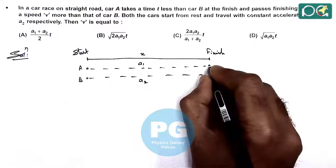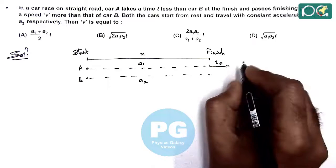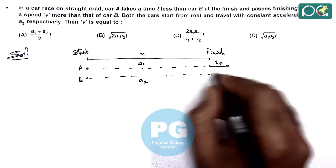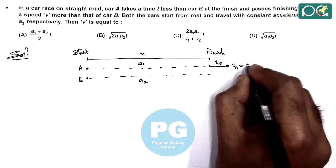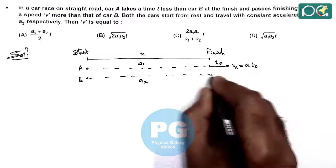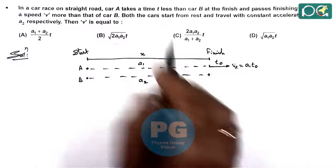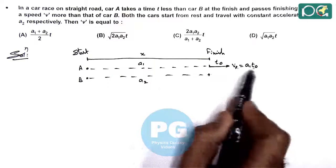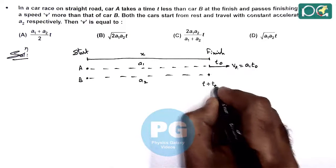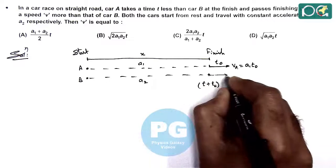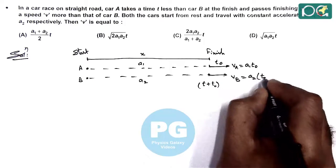So if we consider car A reaches here in time t naught, then its velocity can be given as a1 times t naught. It is given car B takes T time more than car A, so it reaches here at t naught plus T. So we can write the velocity VB here is a2 times t naught plus T.